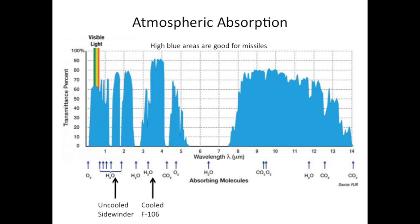Focus your attention on the left side of this chart. The colored bands are visible light. The high blue bands are the areas where there is less atmospheric absorption, and these are good for missile tracking.